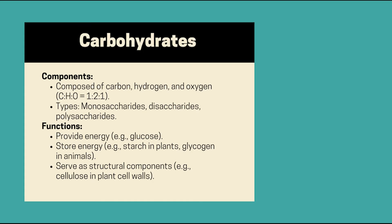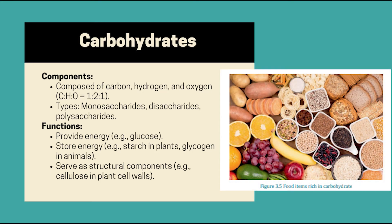Carbohydrates are made of carbon, hydrogen, and oxygen in a one-to-two-to-one ratio. That means for every carbon atom, there are two hydrogen and one oxygen. They come in three types. Monosaccharides are simple sugars like glucose. Disaccharides are two sugar units like sucrose, or table sugar. Polysaccharides are long chains like starch, glycogen, and cellulose.